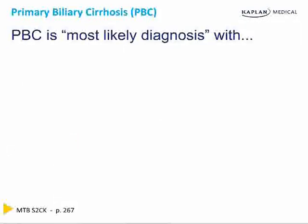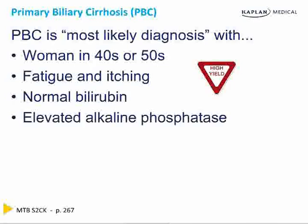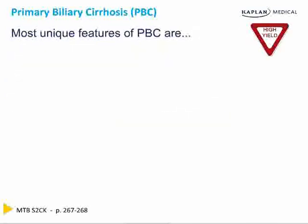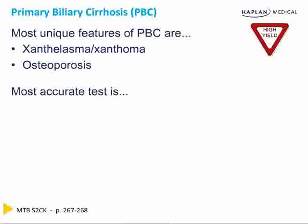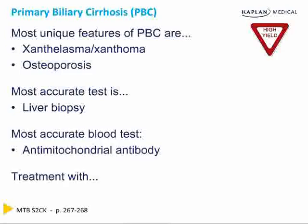Primary biliary cirrhosis is the most likely diagnosis when presented with a woman in her 40s or 50s complaining of fatigue and itching, with a normal bilirubin but a sole elevated alkaline phosphatase. Common features include xanthelasma or xanthomas and osteoporosis. The most accurate test is a liver biopsy; the most accurate blood test is an antimitochondrial antibody. Treatment is with ursodeoxycholic acid.